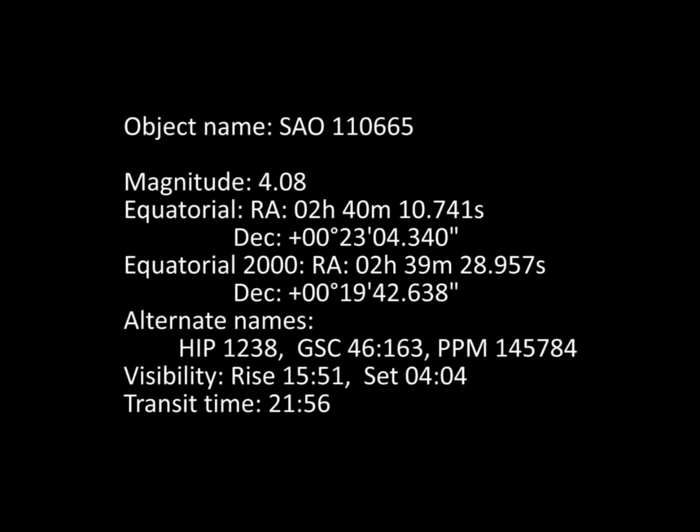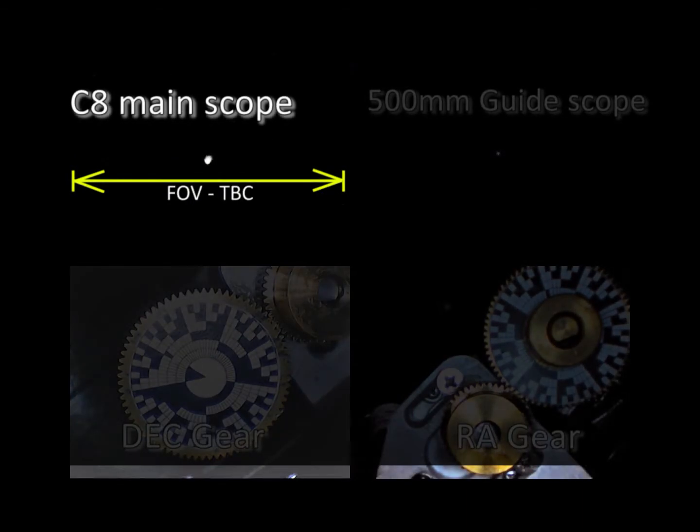One of the primary objectives of this video is to demonstrate that the declination or dec gear does not move during tracking, except when the operator is slewing the object of interest into position, and only during guiding if there is a correction pulse sent from your guiding solution.